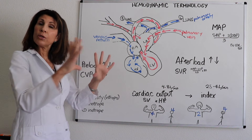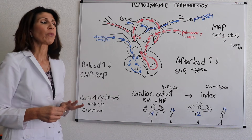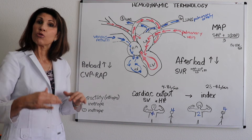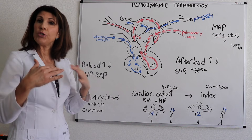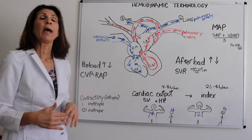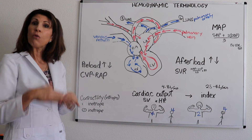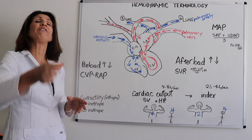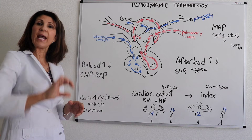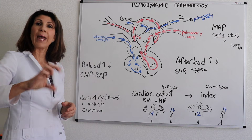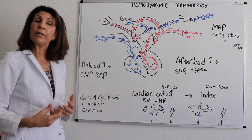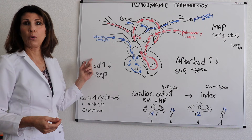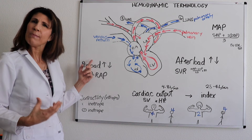Even morphine sulfate given to patients with cardiac compromise having an MI will not only satisfy pain as an opioid, but it will also dilate the venous system. Would we ever want to increase preload? Absolutely — patients with low flow states and shock states — we definitely want to fill up the tank and add more volume into their intravascular space.